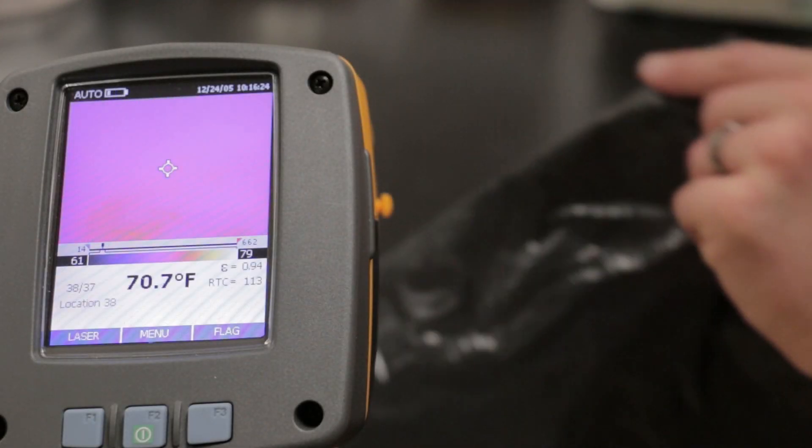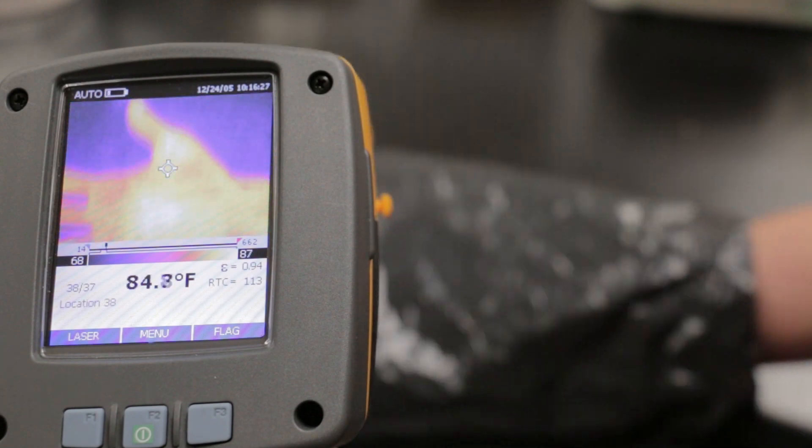However, some objects like plastic trash bags are transparent in the infrared.